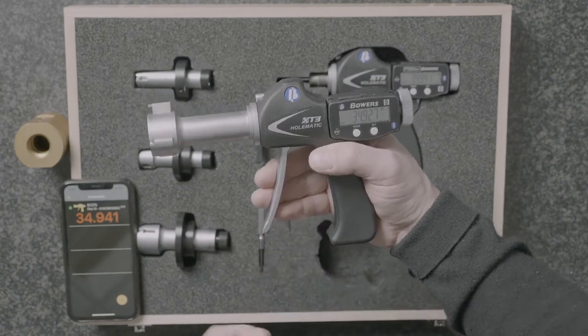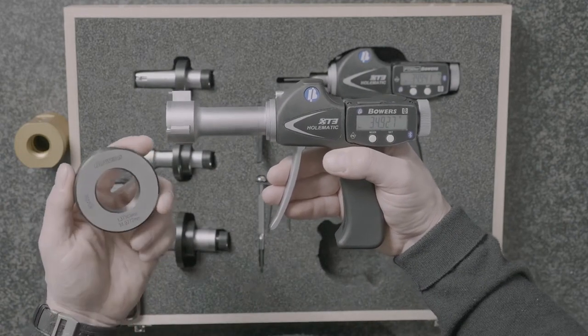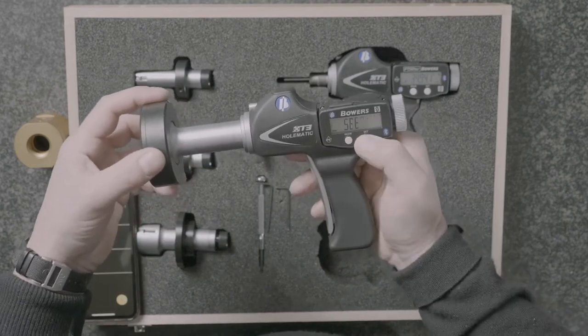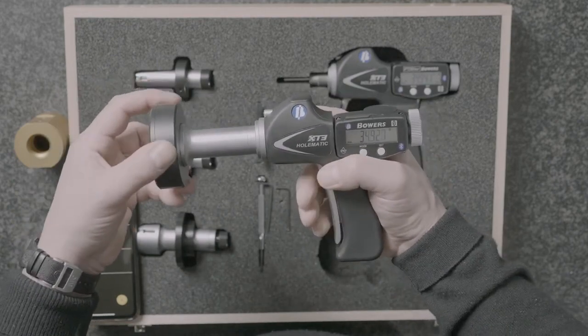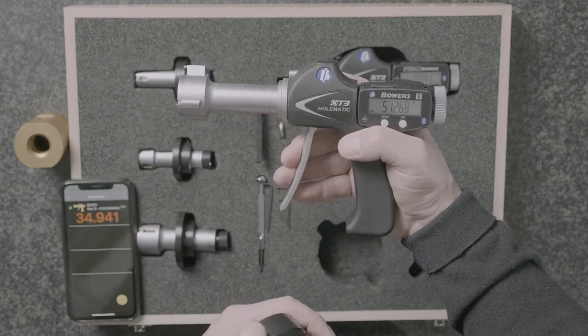Setting the gauge is very easy. We use the ring gauge that's supplied with it. We simply enter that into the gauge, set to the preset of the ring and we're ready to go. We're measuring anywhere in that 35 to 50mm range in this case.